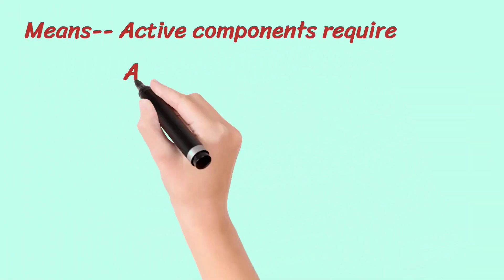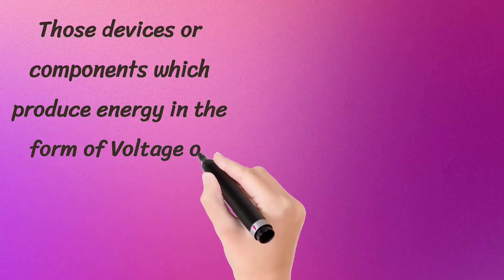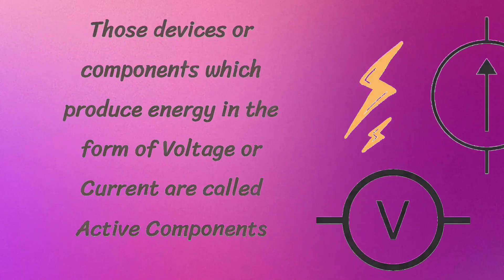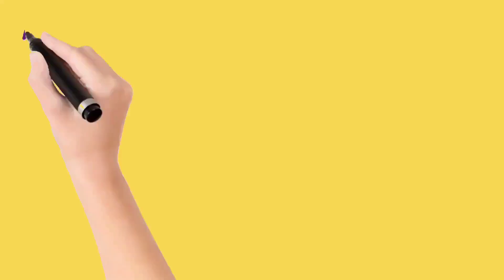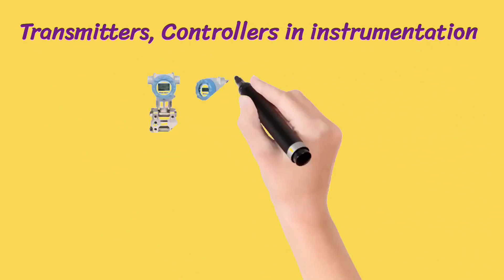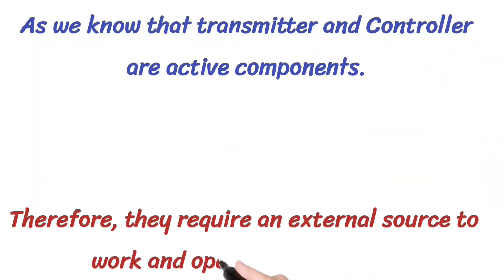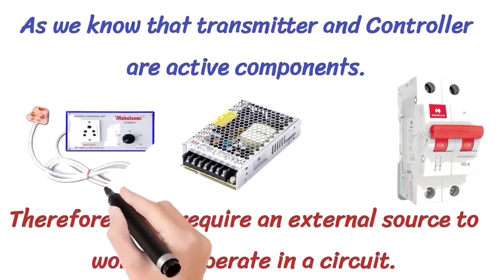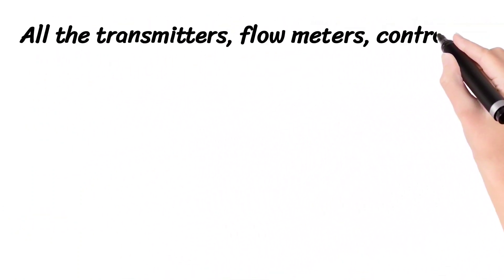Equipment or components that produce energy in the form of voltage or current are called active components. In electronics, examples include diode and transistor. In instrumentation, examples are transmitter and controller. Because transmitters and controllers are active components, they need an external supply source to operate — typically 24V DC supply for the transmitter and 220V AC supply for the controller.